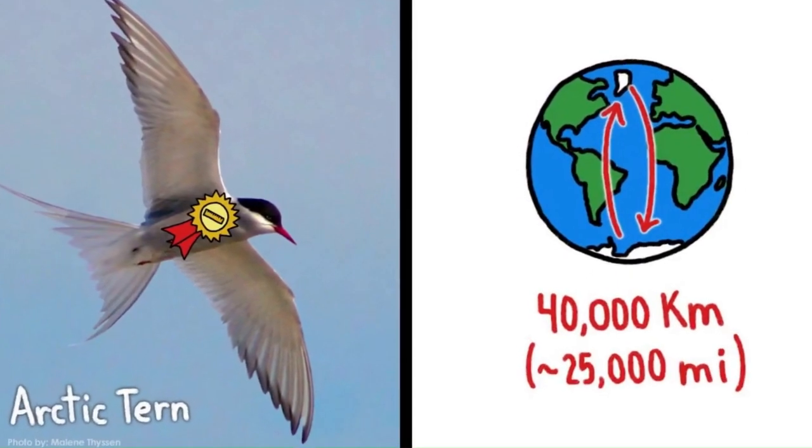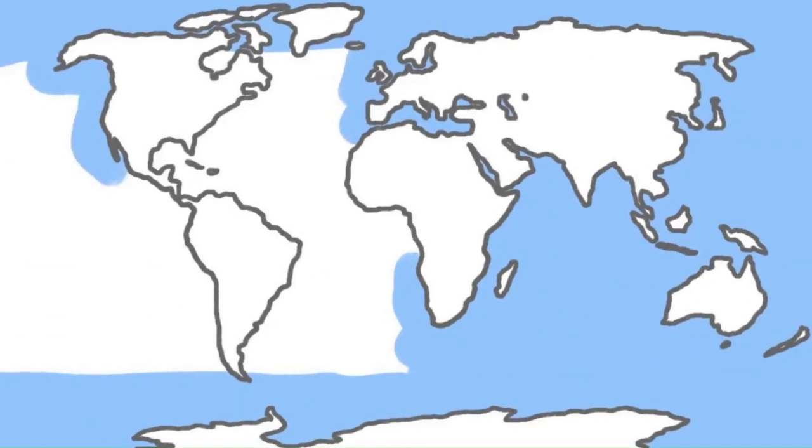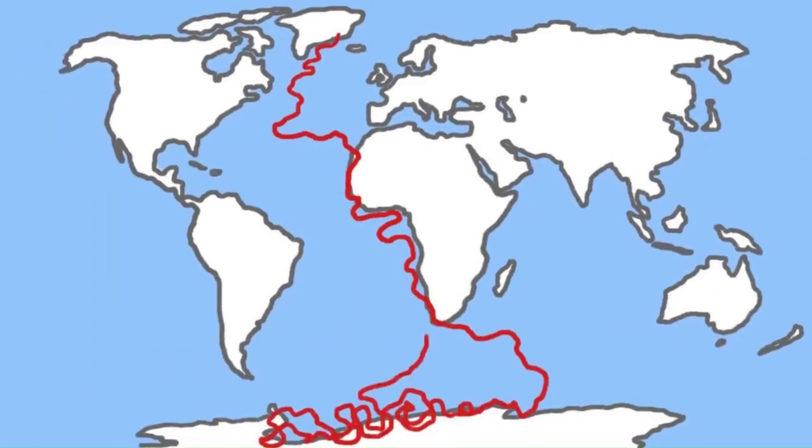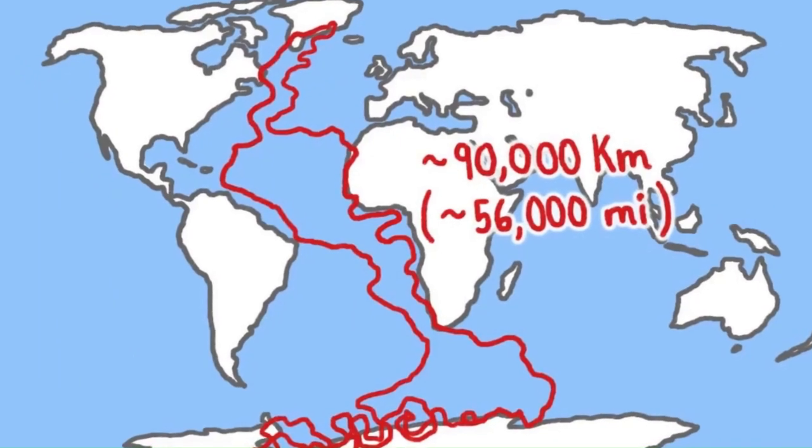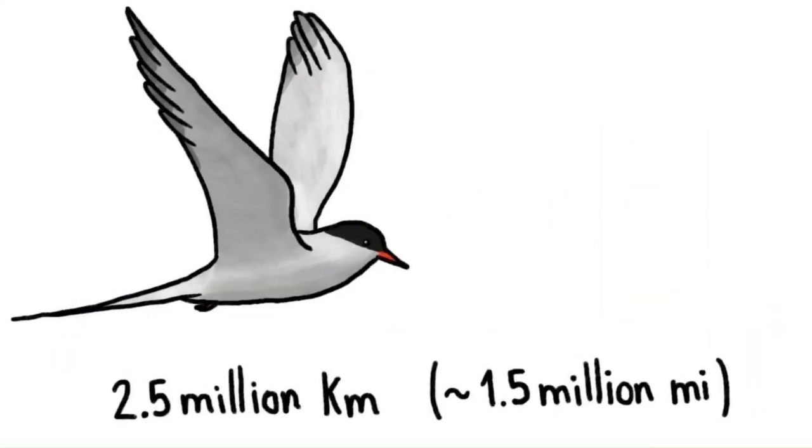These clever geolocators have shed light on the world's speediest migration, the Great Snipe, which weighs about 170 grams—half a can of soda pop—hightails it from Sweden to Central Africa in just three days, averaging 95 kilometers per hour.